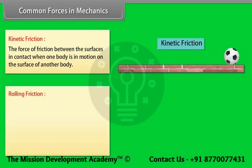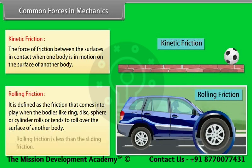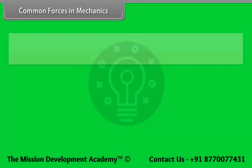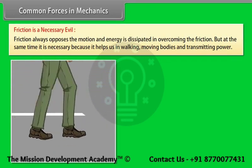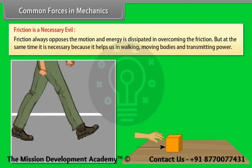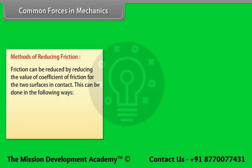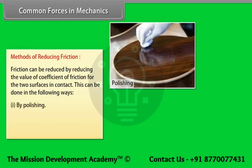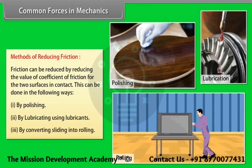Rolling friction is the friction that comes into play when bodies like a ring, disc, sphere, or cylinder roll or tend to roll over the surface of another body. Rolling friction is less than sliding friction. Friction is a necessary evil — it always opposes motion and energy is dissipated in overcoming it, but it is necessary for walking, moving bodies, and transmitting power. Friction can be reduced by polishing, by lubricating with lubricants, or by converting sliding into rolling.